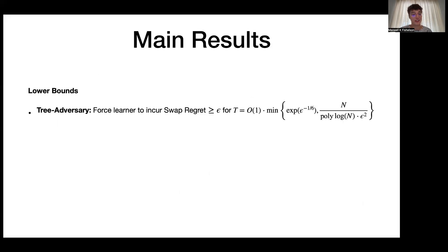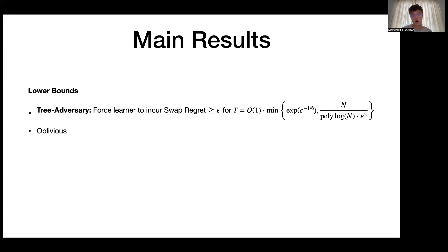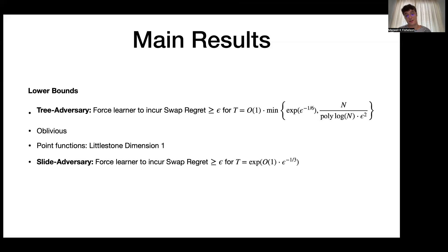We also have lower bounds: we construct an adversary that forces any learner to incur swap regret at least epsilon in time either N/epsilon² (when N is small) or exponential in 1/epsilon (when N is large). Our lower bound is oblivious with constant Littlestone dimension, giving somewhat matching lower bounds. We also include another lower bound with a slightly better dependence on epsilon, though it is not oblivious.